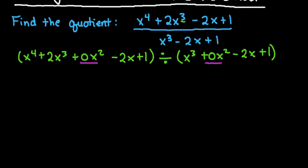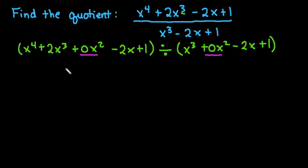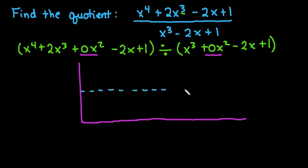When we set up our synthetic division box, we're going to set it up a little bit different than before. Normally we just set it up with one line, but what we're going to do is we're going to add a dotted line in between, and we want to leave it to where it's a little bit bigger to where I can put two numbers in both of these spots.